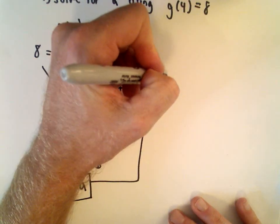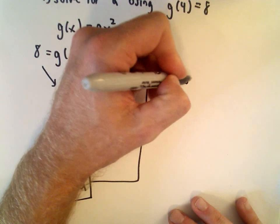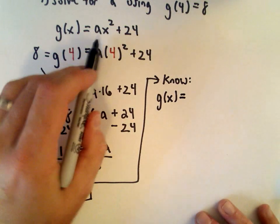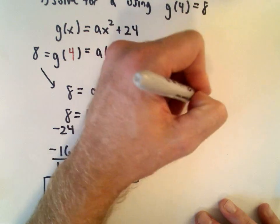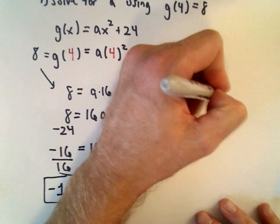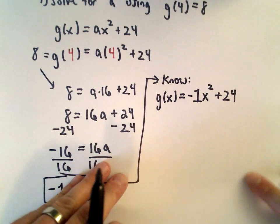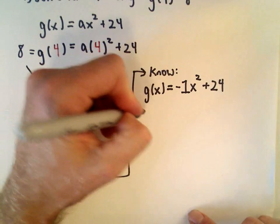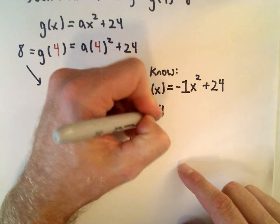Okay, so now we know that our function g(x) should look like this, so we've got a being -1 multiplied by x squared plus 24. And we wanted to evaluate g(-4). Okay, so I'm just going to replace the x with -4.